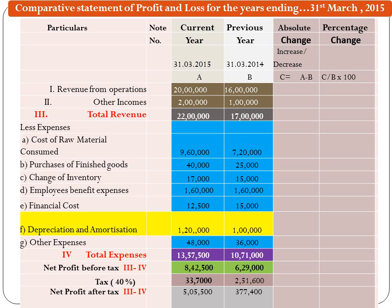The next head of Expenses is Depreciation and Amortization. Depreciation represents depreciation on Fixed Tangible Assets like Depreciation on Building, Machinery, or Furniture. Amortization reflects decrease in Intangible Assets — for example, Goodwill Written Off, Patents Written Off, or Trademarks Written Off.